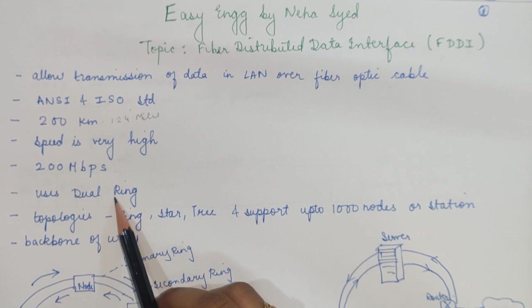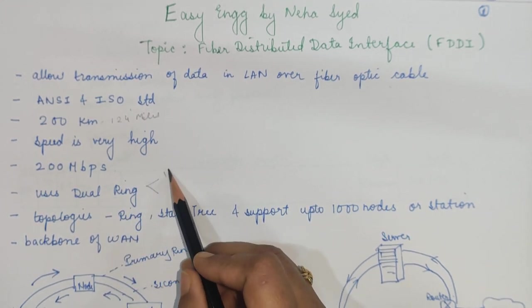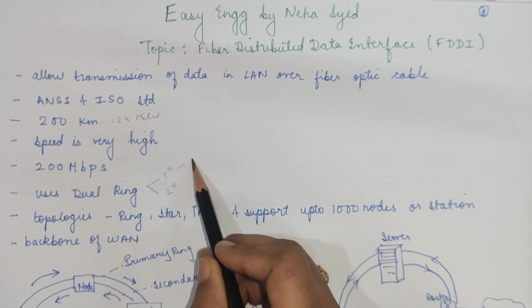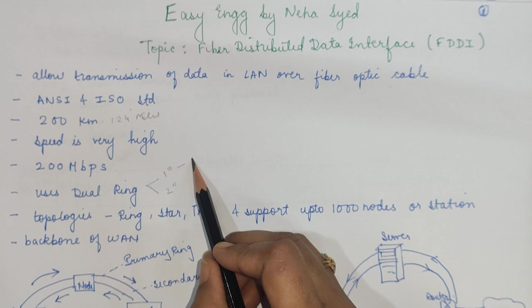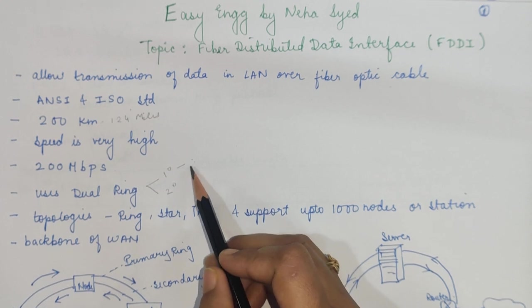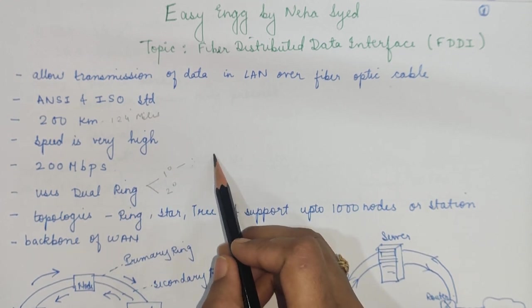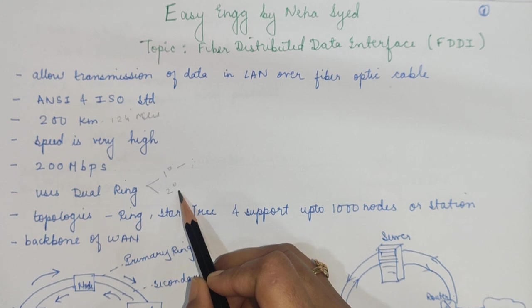FDDI uses a dual ring strategy to transmit data. There are two rings: a primary ring and a secondary ring. The primary ring is responsible for the transmission of data or frames from one point to another, and the speed here can be up to 100 Mbps. The secondary ring is used for backup and recovery in case the primary ring fails.